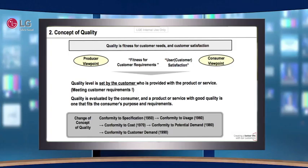Looking at the trends through the decades: in the 1950s it was conformity to specification; in the 60s, conformity to usage; in the 70s, conformity to cost; in the 80s, conformity to potential demand; and in the 90s, conformity to customer demand.